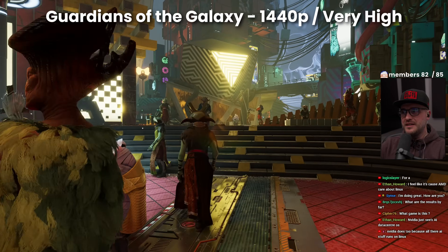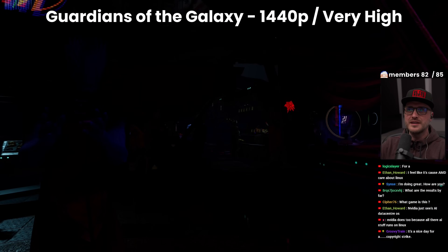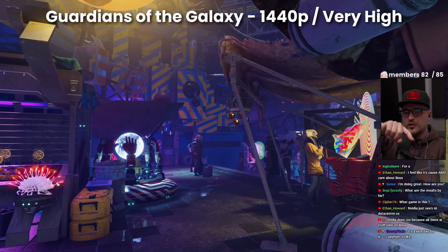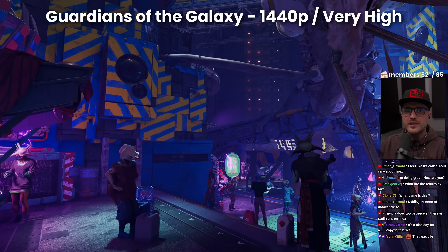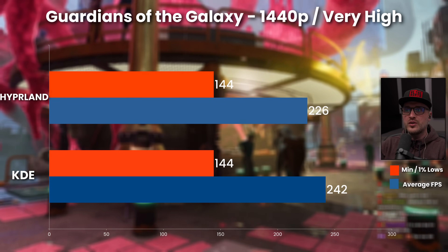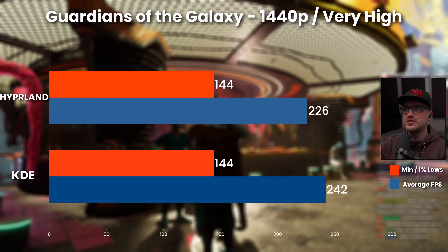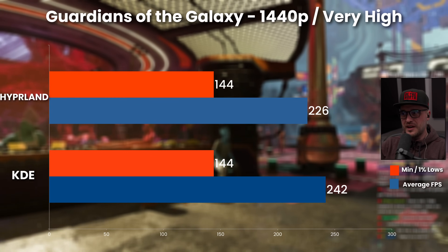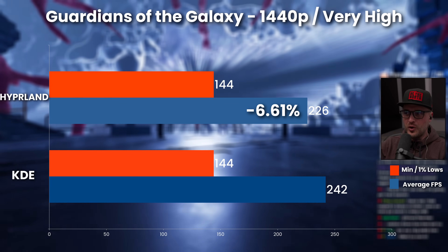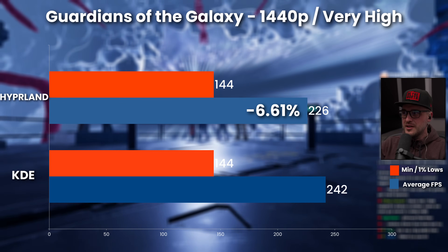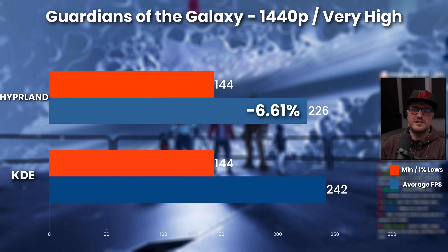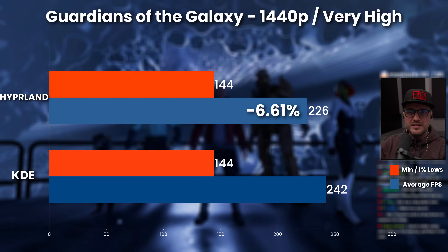Guardians of the Galaxy — proper benchmark. I reran it twice because when you run the benchmark for the first time it's kind of choppy with a big dip at the beginning. We have the same trend: 242 FPS average for KDE versus 226 FPS average on Hyprland. For the minimum, they are the same — 144 FPS for both desktop environments. But the difference for the average is around minus 6.6%. So yes, Hyprland is again behind.